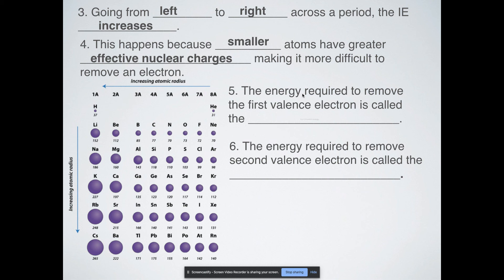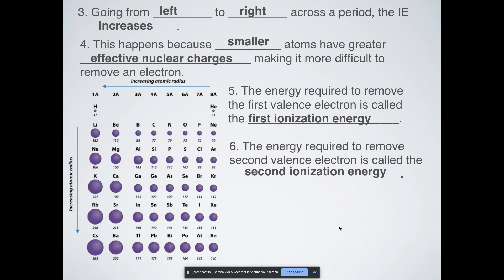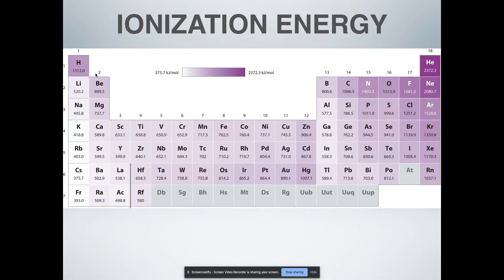If you want to remove one valence electron, we call that the first ionization energy. Removing a second valence electron is the second ionization energy, and you can keep going — third, fourth, fifth, sixth, seventh, all the way up to 118 — you can have the 118th ionization energy. Each time, it's going to cost you more and more energy to remove those electrons. Looking at the general pattern, ionization energies get lower and lower as we go down. Francium has the lowest ionization energy and will easily lose its electron, whereas helium has the highest — it's extremely difficult to remove even just one electron from helium.